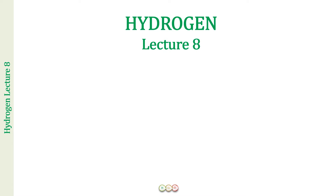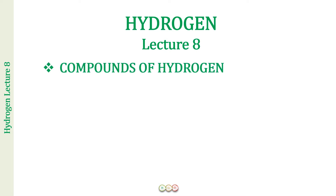Till now in this course we have had a detailed discussion on hydrogen, and in the last lecture we started the discussion on the compounds of hydrogen, where we started our discussion on the hydrides. Hydrides are the binary compounds of hydrogen, meaning two-element compounds, one of which is hydrogen and the other can be some other element. If you have any doubts, put them in the comment section or email them to us.